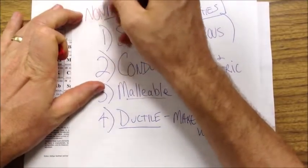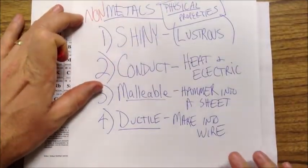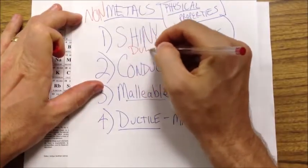Non-metals. So for non-metals, non-metals are the opposite of all these things. They're not shiny, they're dull.